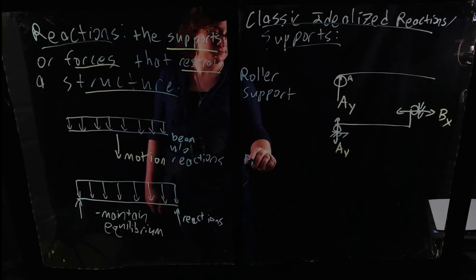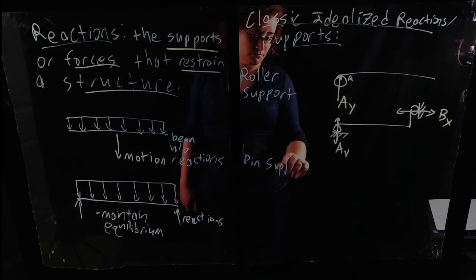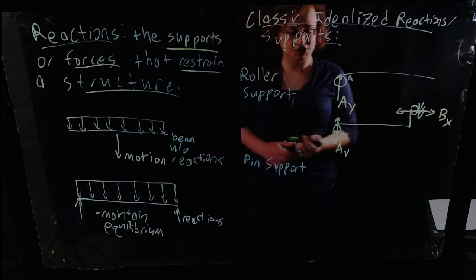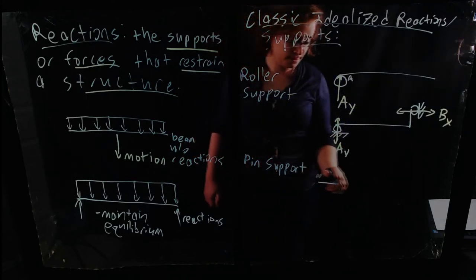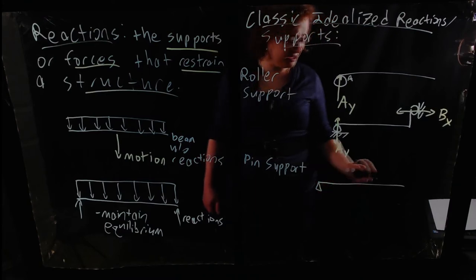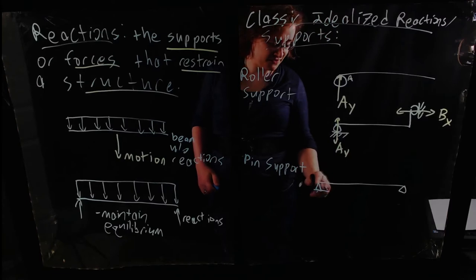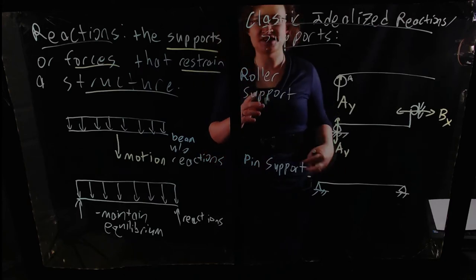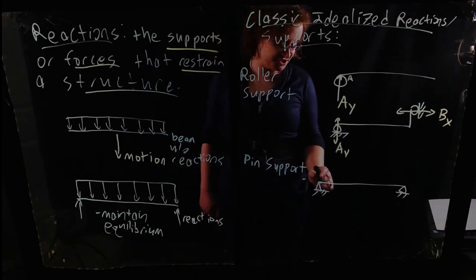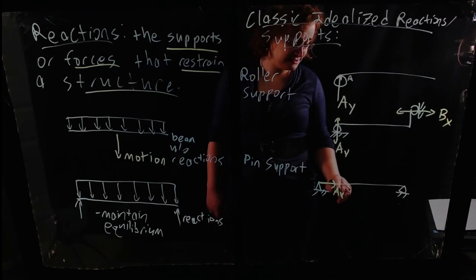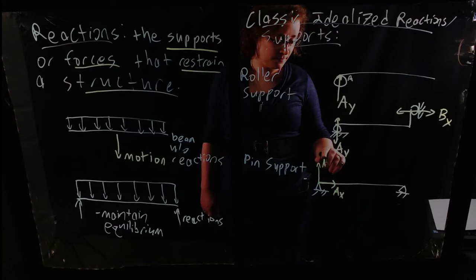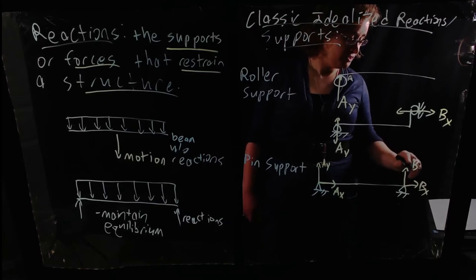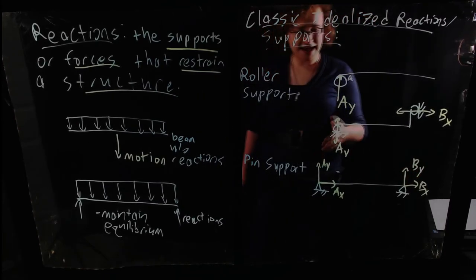Then we have a pin support. And a pin support is capable of providing not one, but two directions of translational resistance. And it's usually drawn as a little pyramid, something like this. Maybe something like this. Sometimes a surface is shown. And the key is that it can resist motion in two directions, two translational directions. So we would have both an AX and an AY. Maybe a BX and a BY. So we have our pin support and our roller support.